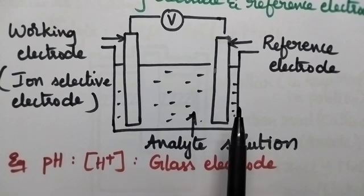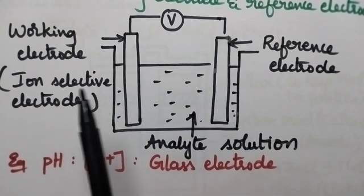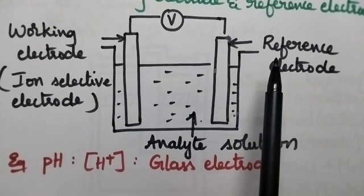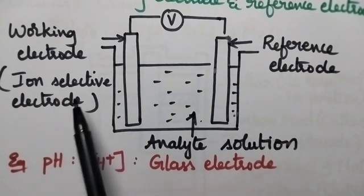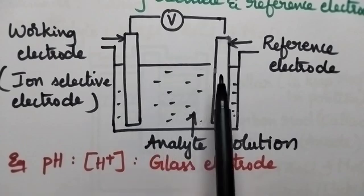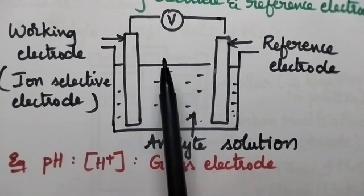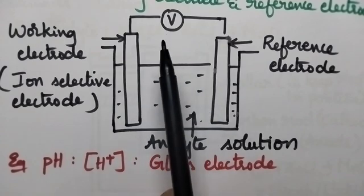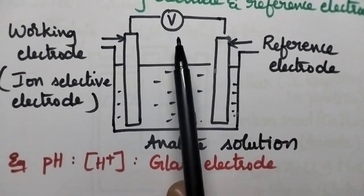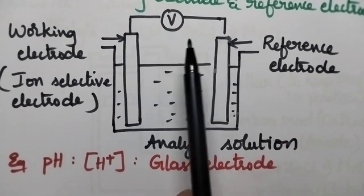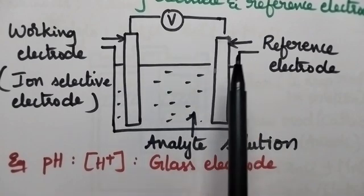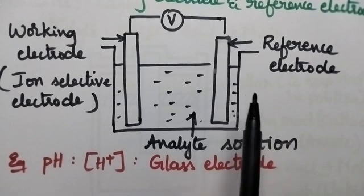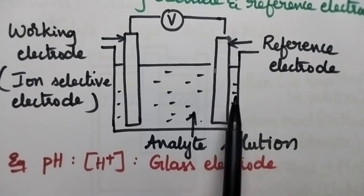Coming to the potentiometric sensor, it consists of two electrodes: one is the working electrode and the other is the reference electrode. Generally, the working electrode is an ion selective electrode. These two electrodes are connected through a potentiometer, which is capable of measuring the potential difference between them, thereby giving the concentration of the test solution under investigation.